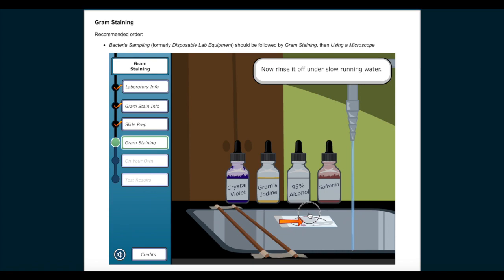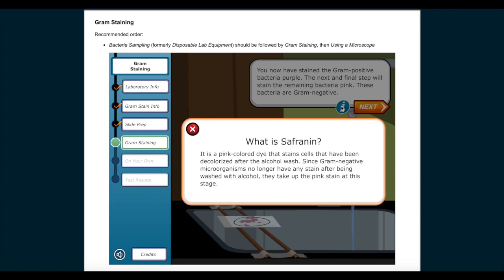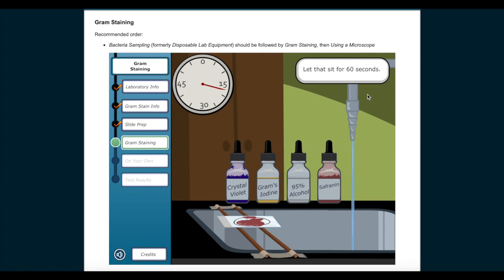You now have stained the gram-positive bacteria purple. The next and final step will stain the remaining bacteria pink. These bacteria are gram-negative. What is safranine? It is a pink colored dye that stains cells that have been decolorized after the alcohol wash. Since gram-negative microorganisms no longer have any stain after being washed with alcohol, they take up the pink stain at this stage. Use the dropper to cover the slide with safranine. Let that sit for 60 seconds. Now rinse it under slow running water.